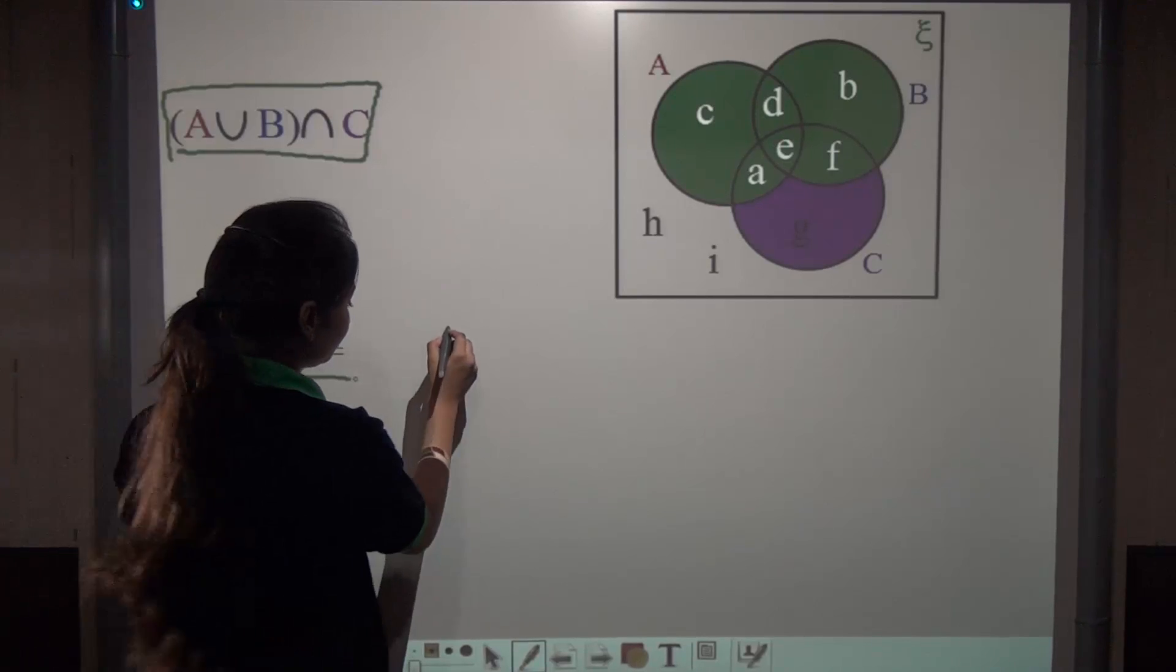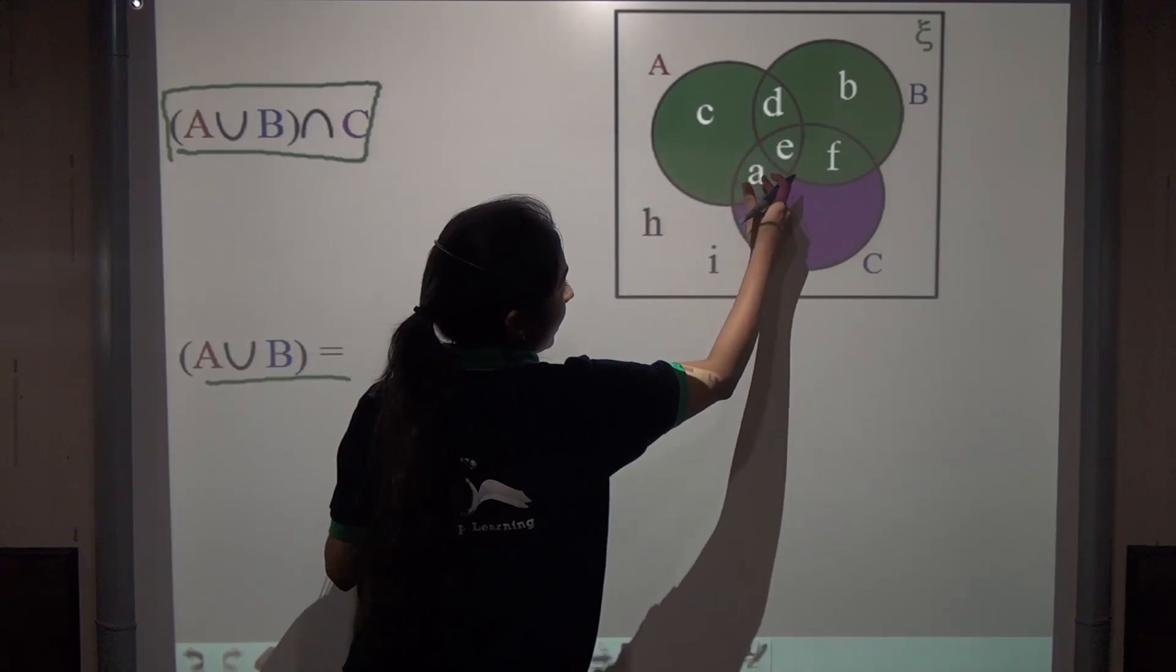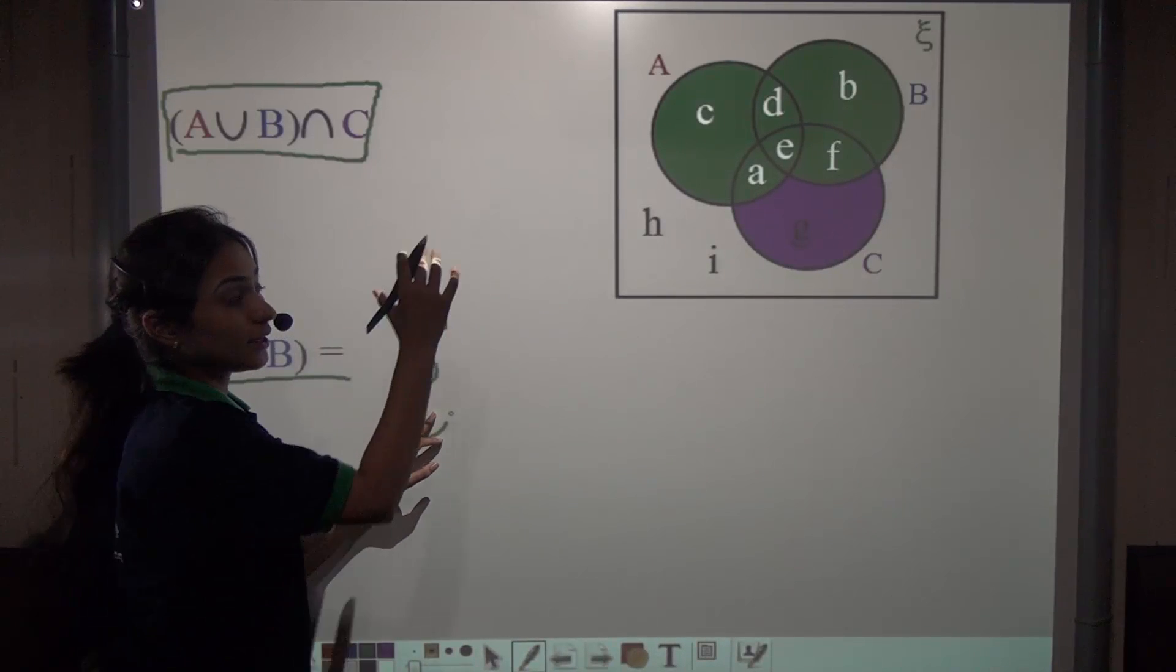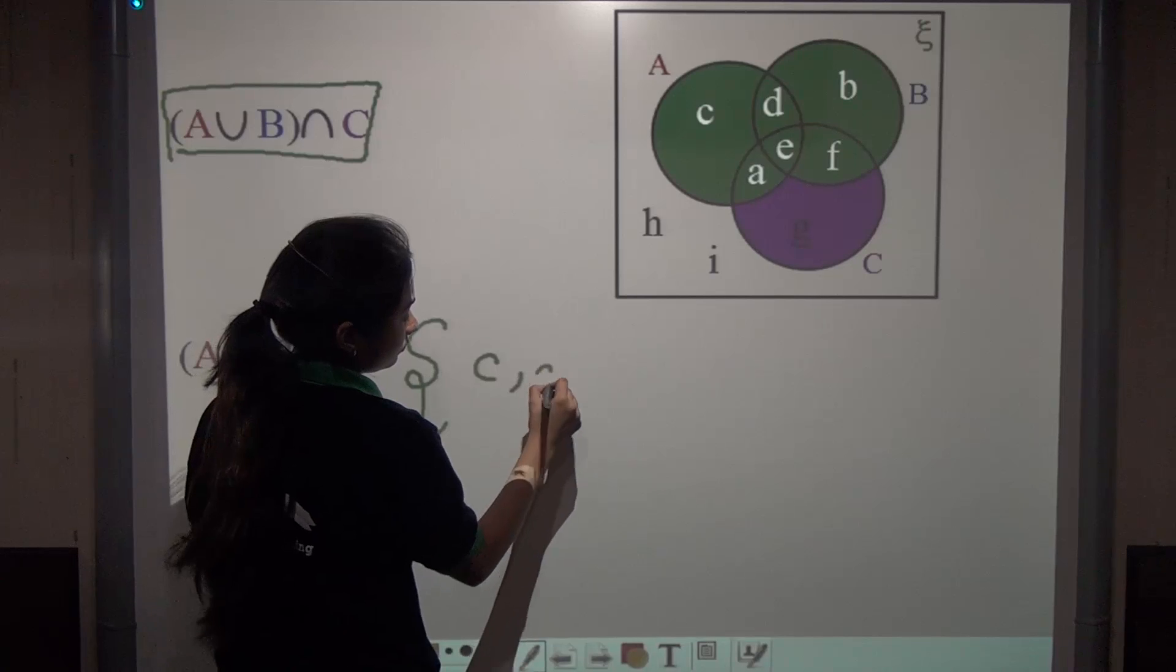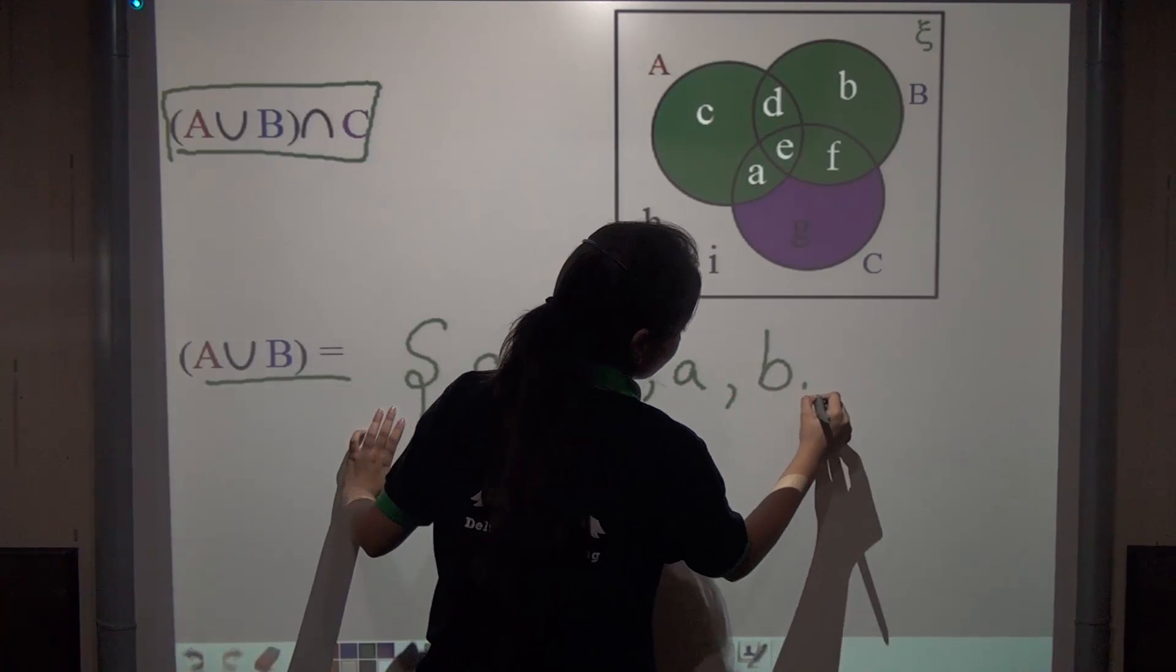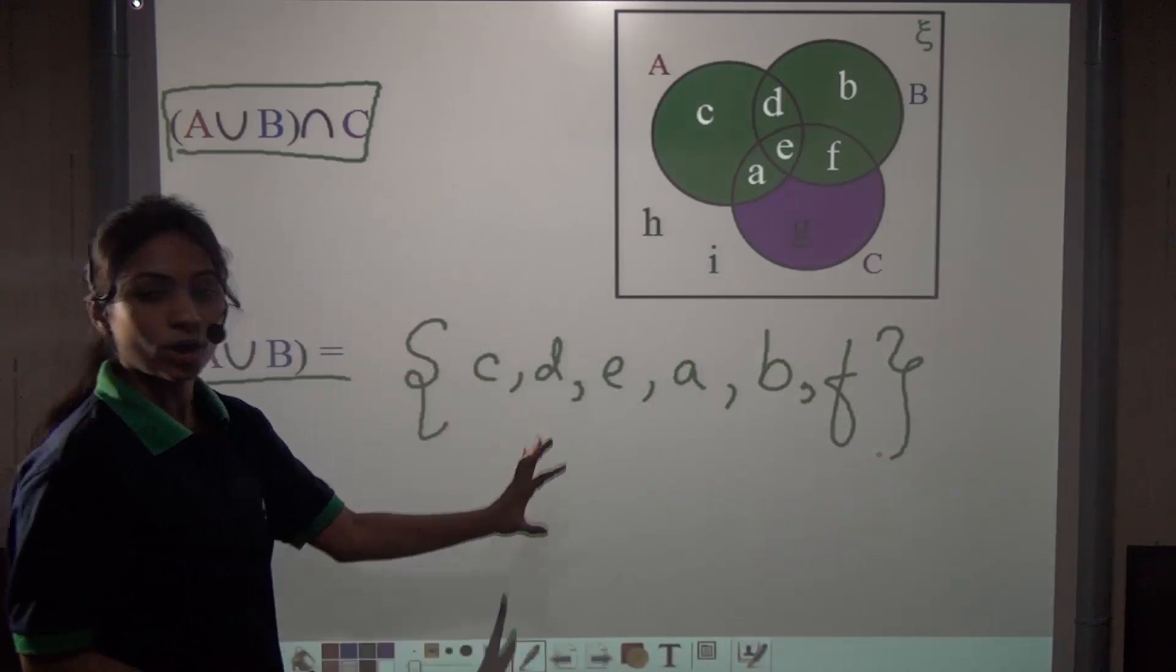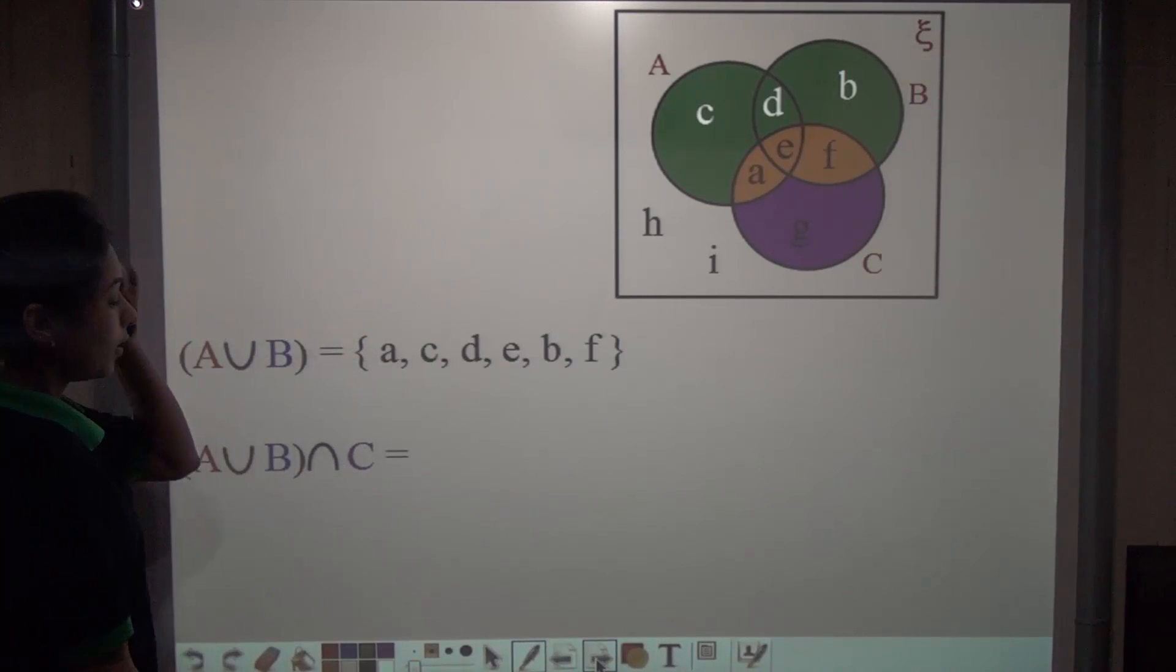Write down the letters c, d, e, a, b, and f. You can write them in any order, but the letters should not be repeated. Writing them in any order will give you the right answer.